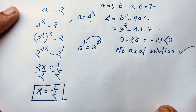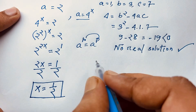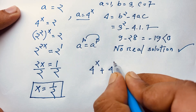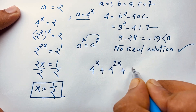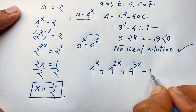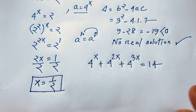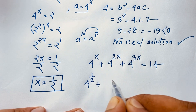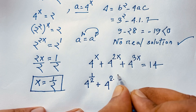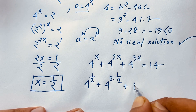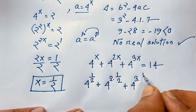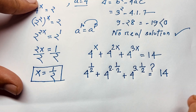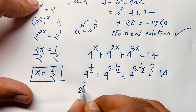Let's verify our answer. The question is: 4 to the power x plus 4 to the power 2x plus 4 to the power 3x equals 14. Substituting x equals 1/2: 4 to the power 1/2 plus 4 to the power 2 times 1/2 plus 4 to the power 3 times 1/2 equals 14.